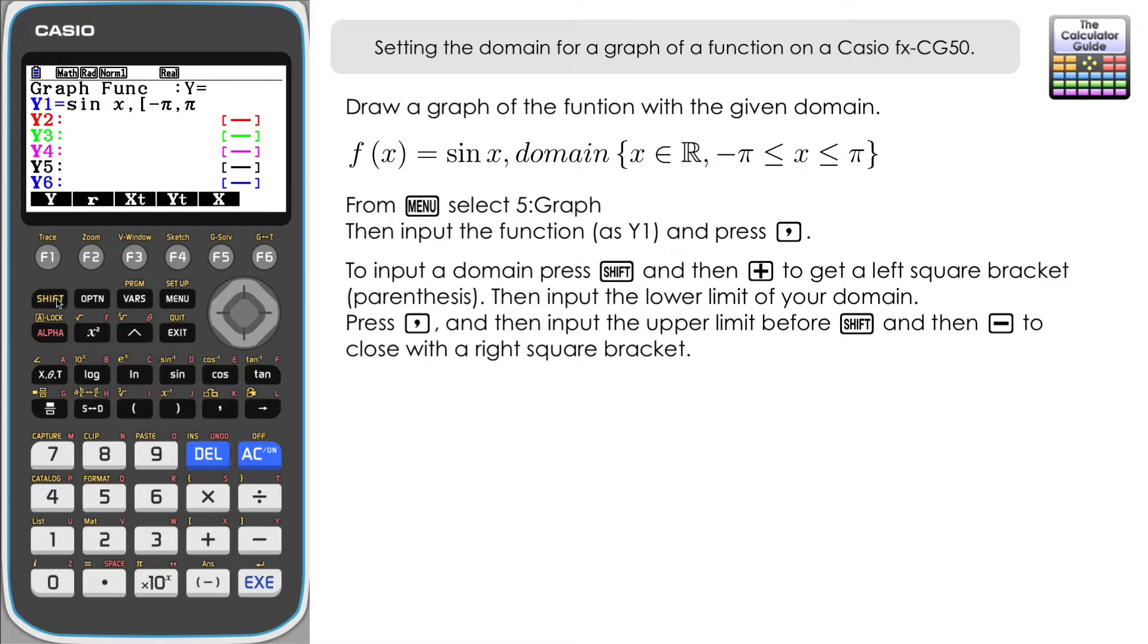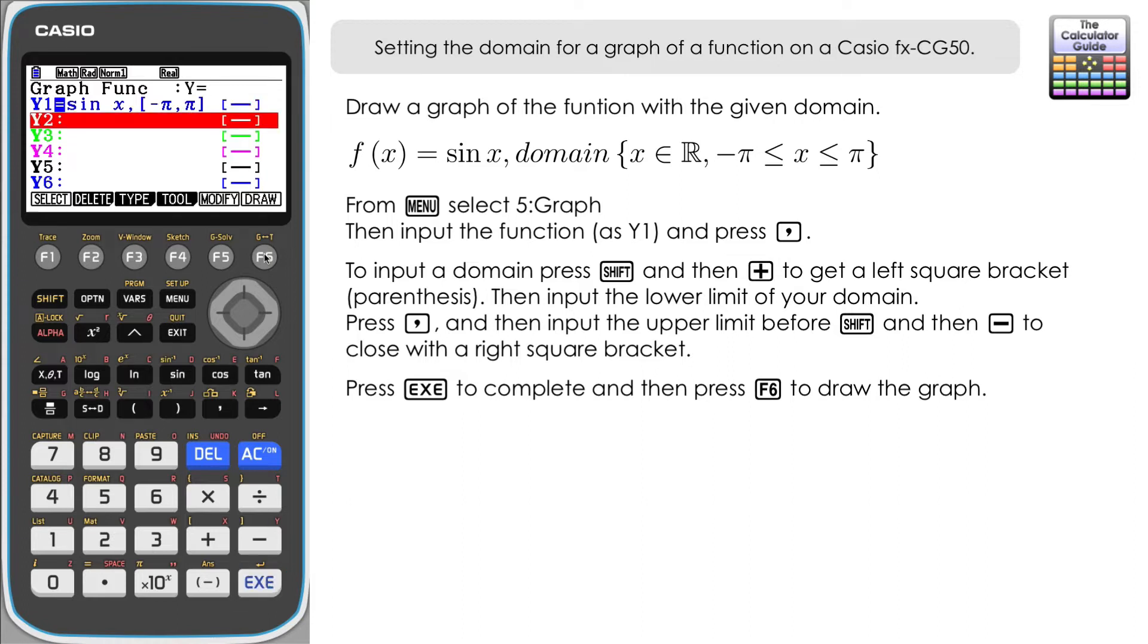So that's positive π, so that's just π shift and π and then shift and the minus sign will give us a right bracket to close off the domain. Press execute and then we'll press F6 for draw and you can see we have our graph drawn here between those limits.